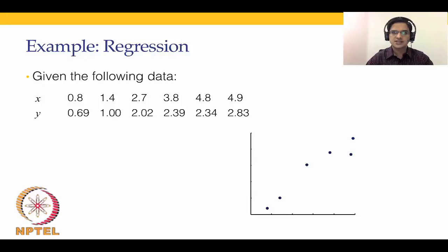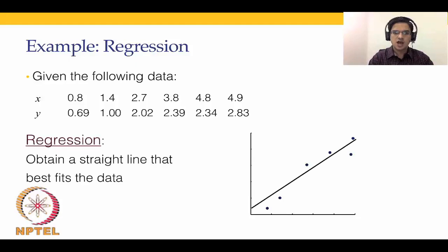Let's first take an example. We have been given the following data — x is given here and y is given alongside x. When we plot an x versus y curve we get these data points in two-dimensional space. What regression tells us is how to obtain a straight line that best fits the data. This straight line is of the form a₀ + a₁x = y, and we want to find the values of a₀ and a₁ so that this line is the best fit for all the data points. In regression we minimize the error between the points on this line and the corresponding data points shown.